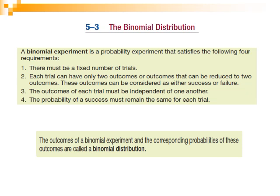What we discussed is summarized in this table: there must be a fixed number of trials, there are only two outcomes, the trials must be independent, and the probability of success remains the same across all trials.